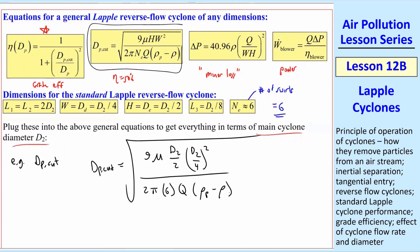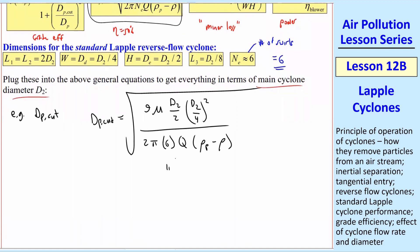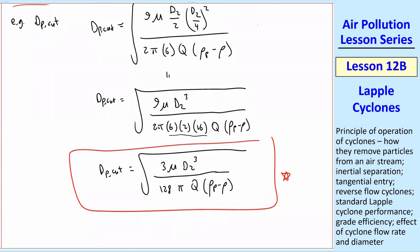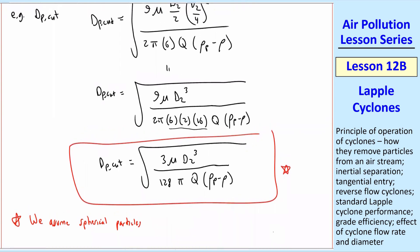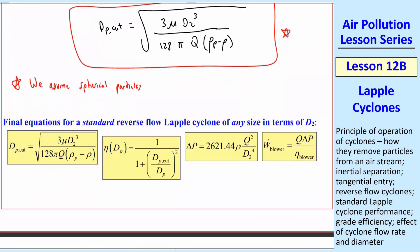So that's what that looks like. I'll do a little bit of algebra here. And when you work out the numbers, DP_cut in terms of D2, you also have to know Q and the properties of the air to get rho and mu and the density of the particles. And we always assume spherical particles. These equations come from empirical testing with spherical particles. Of course, if you don't have spheres, you can calculate some kind of equivalent spherical diameter, as we've already discussed.